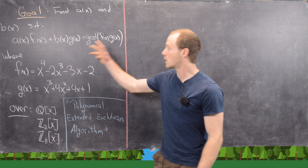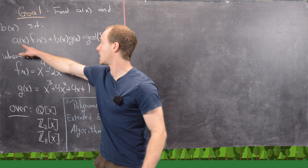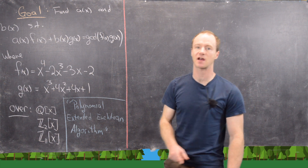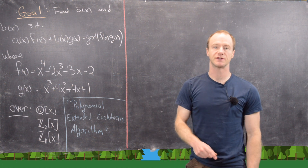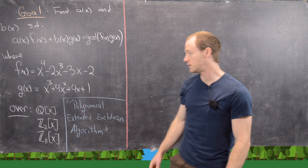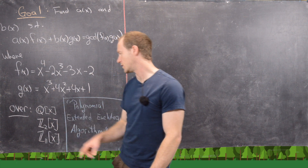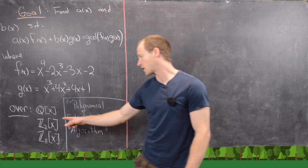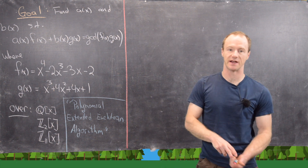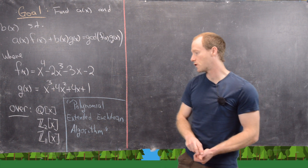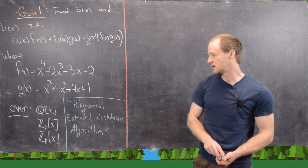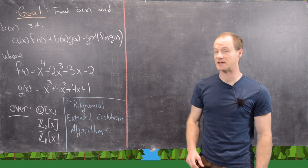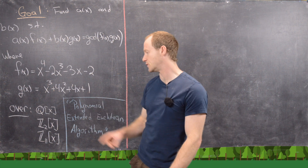What we want to do now is find polynomials a and b that achieve this combination to produce the greatest common divisor. We're going to do that three different times: over the rationals adjoined x, over Z2 adjoined x, and over Z11 adjoined x. Recall that Z_p is a field if and only if p is prime, which is why we chose 2 and 11.